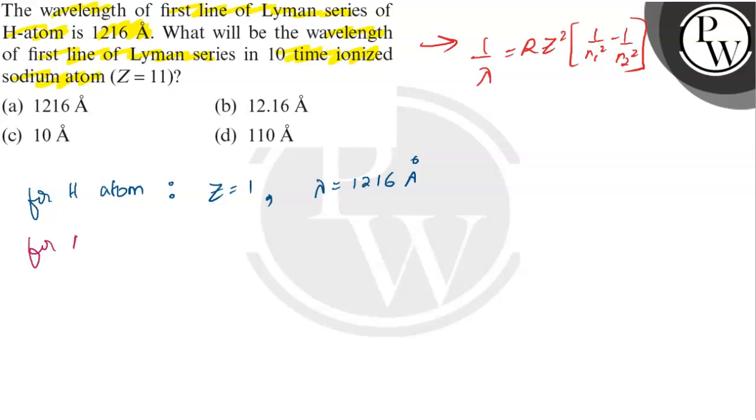For Na atom, for Na plus 10 atom, because it is 10 times ionized, Z we know that 11 will be and lambda will be unknown.